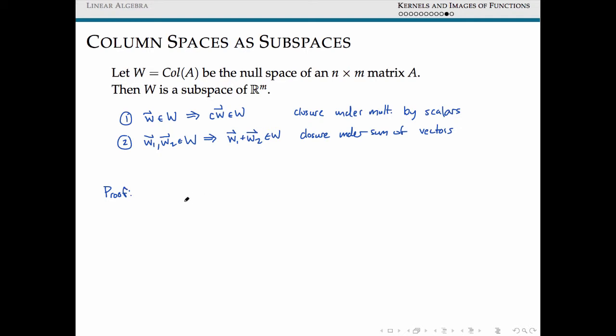Now remember that a vector W is inside the column space of some matrix if W can be written as the sum C1 A1, C2 A2, through Cn An. So that's our definition.